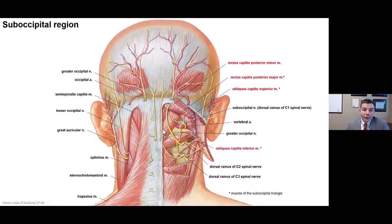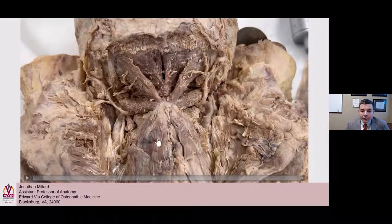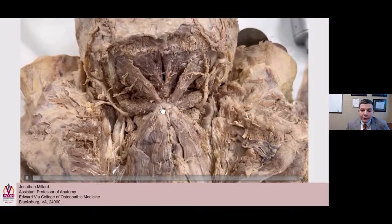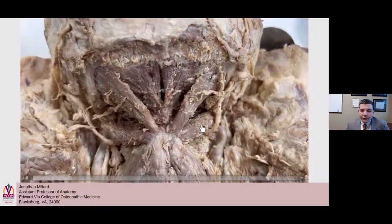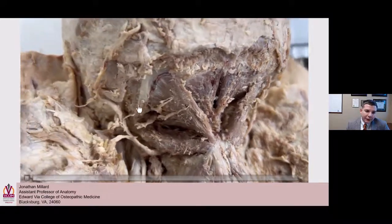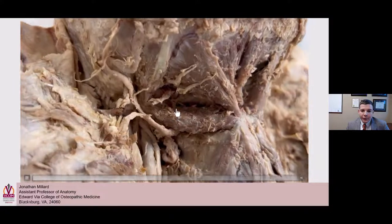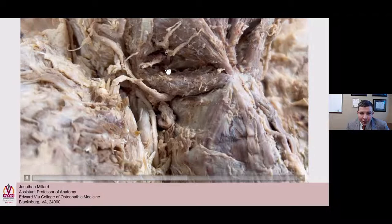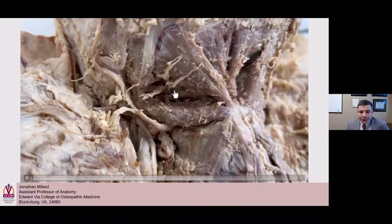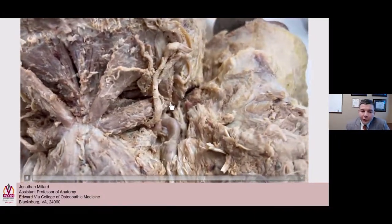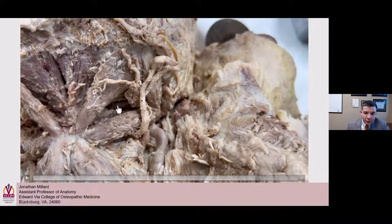Looking at the suboccipital region in this dissection — my students did a great job here. You can see where C2 and C1 are, with rectus capitis major and minor, obliquus inferior, and obliquus capitis superior. Down in that hole is the suboccipital triangle. There's a nerve here associated with occipital neuralgia — the greater occipital nerve — and the occipital artery. Looking inside, you can see the atlas, the suboccipital nerve popping out, and the vertebral artery running over. The dorsal ramus of C1 innervates those muscles. What the study found was these muscles were hypertrophied — very thick — raising the question of whether they could similarly be thicker in humans with Chiari malformation.